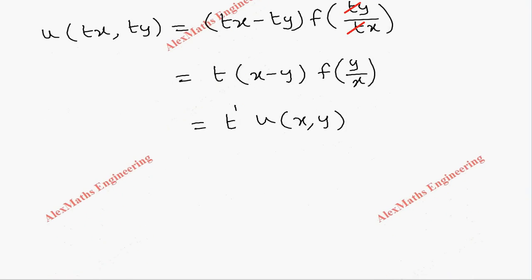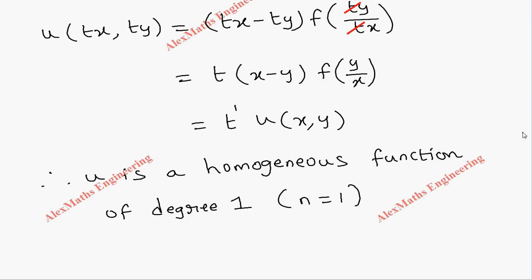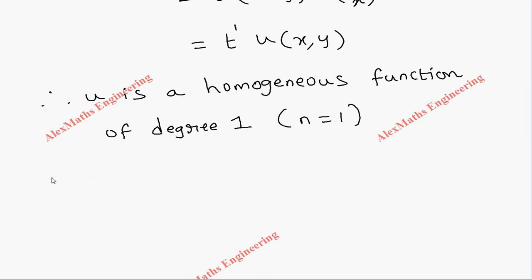So we got the value of n as 1. By Euler's theorem, we have x into partial u by partial x plus y into partial u by partial y equal to n times u.